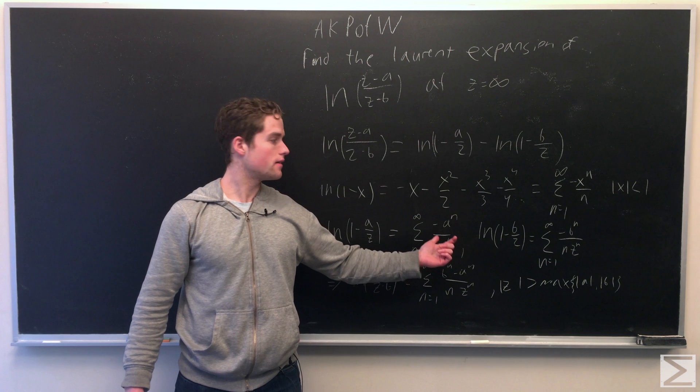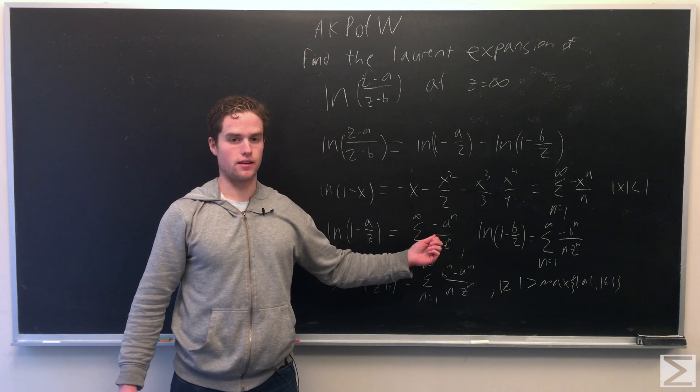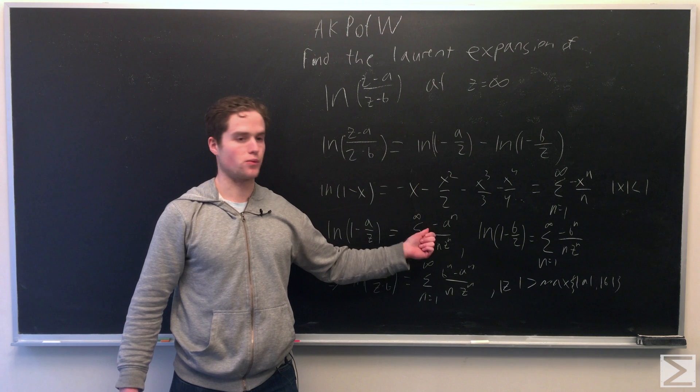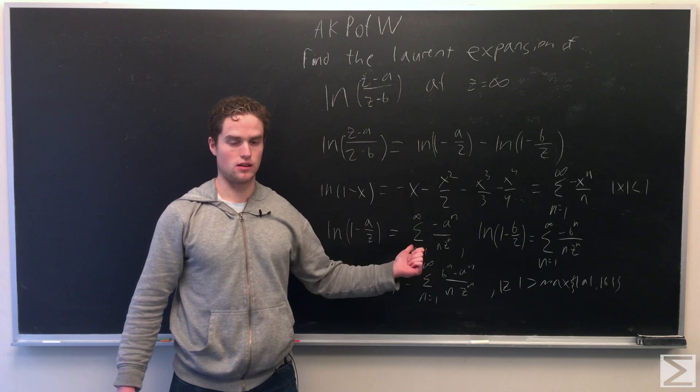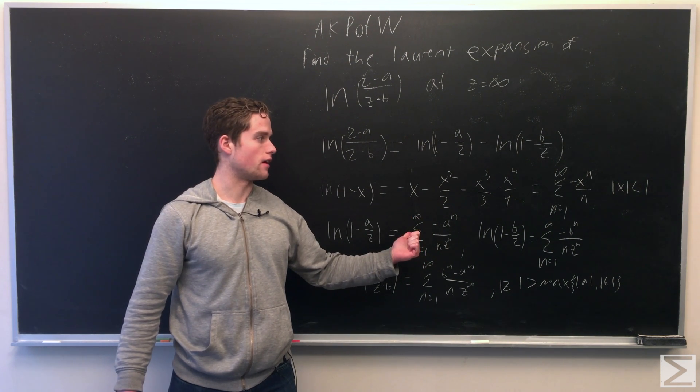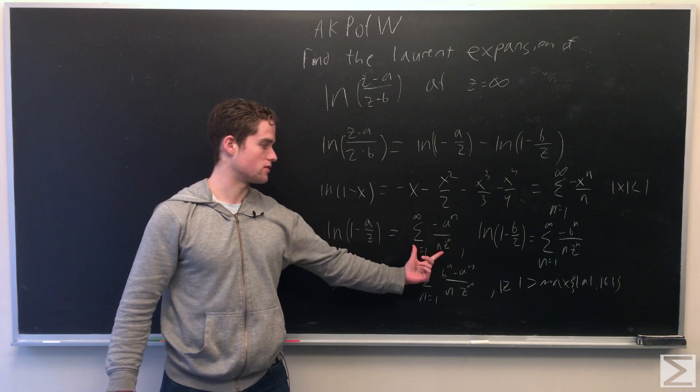And we want a over z to be less than 1, so we want the absolute value of z to be greater than the absolute value of a for this to converge.